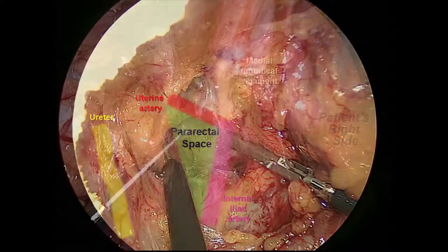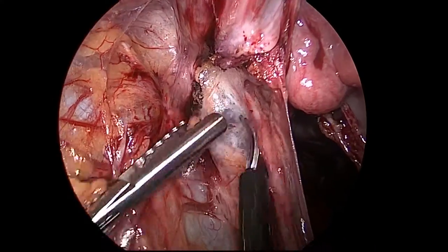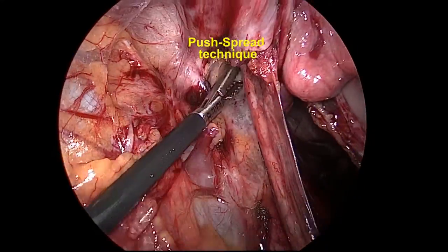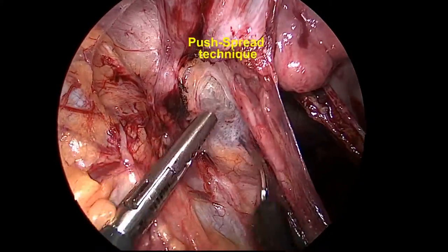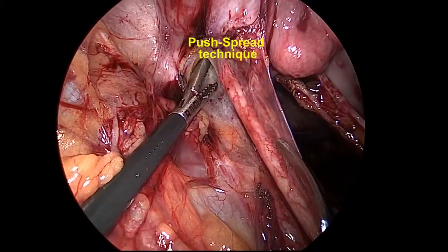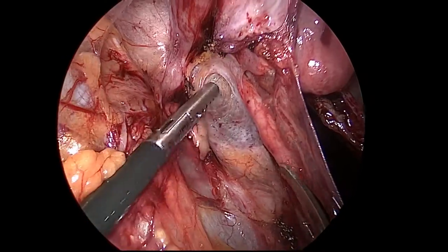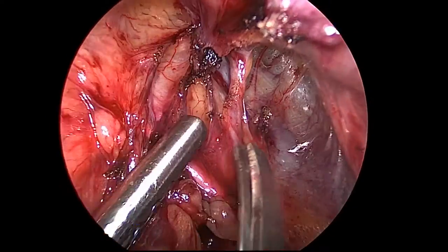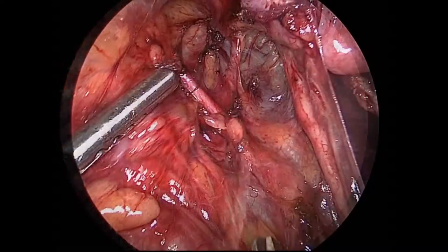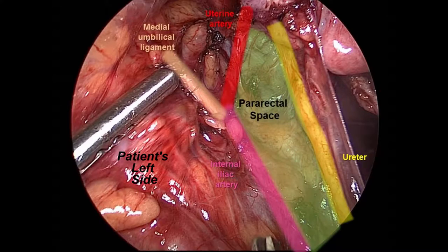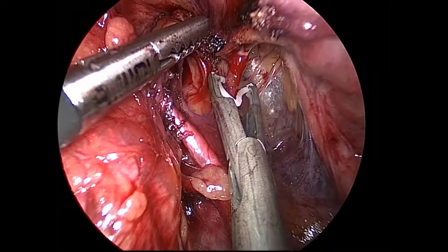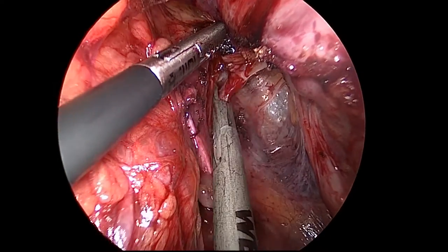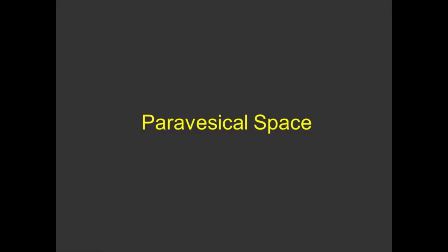The pararectal space is opened and the ureter is isolated by using a push-spread technique in combination with a sweeping maneuver parallel to the course of the ureter. The classic water-under-the-bridge relationship between the uterine artery and the ureter may be exploited to locate and safely ligate the uterine artery at its origin from the internal iliac artery.